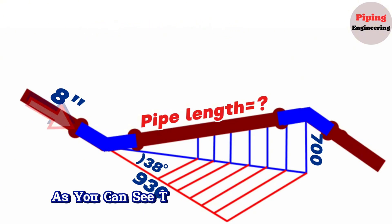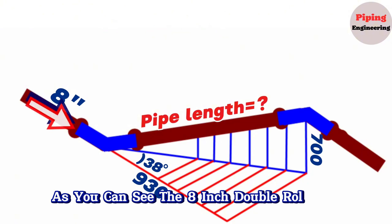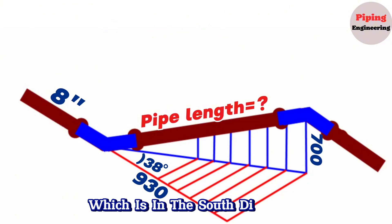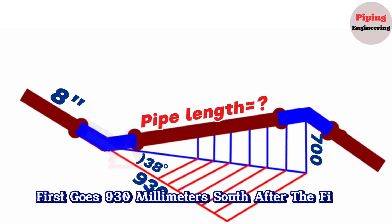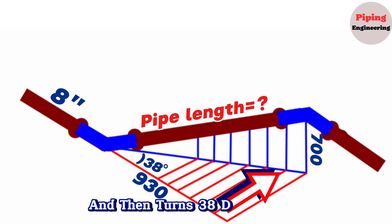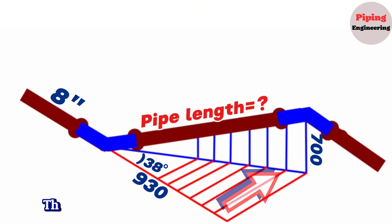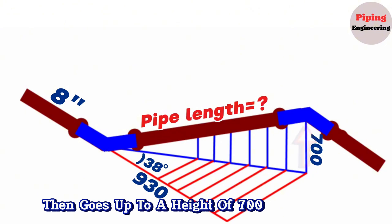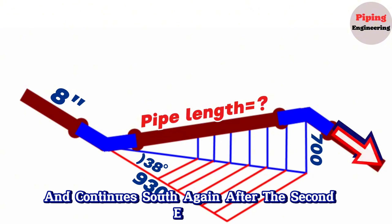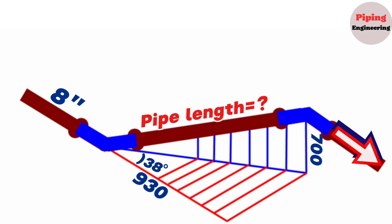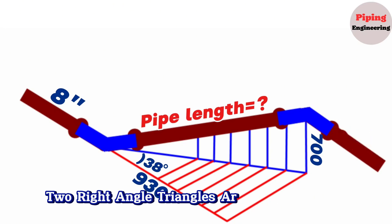As you can see, the 8-inch double rolling pipeline, which is in the south direction, first goes 930mm south after the first elbow and then turns 38 degrees east, then goes up to a height of 700mm and continues south again after the second elbow. After the pipeline rotates, two right-angle triangles are created with dashed lines.